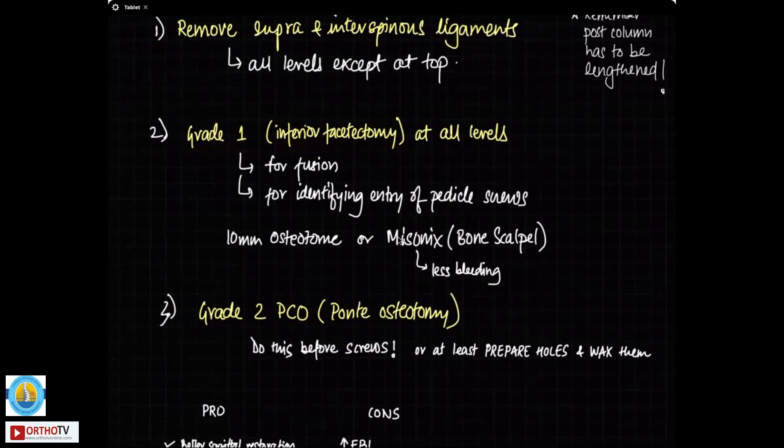The second part also everyone does. That's a grade 1 osteotomy means an inferior facetectomy at all levels. Now, an inferior facetectomy is required not only for fusion, but it is also required for identifying the entry point of the pedicle screws. Your entry point requires you to expose the superior facet of the thoracic vertebra. For that, you have to do an inferior facetectomy. That also allows for a good fusion bed to occur at the facet side. You either use a 10 millimeter osteotome to cut the inferior facet or also you can use bone scalpel or masonics. But not all hospitals have this ultrasonic bone scalpel facility.